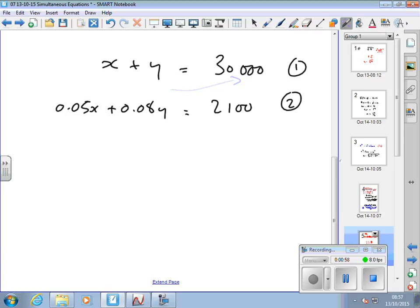So I can say from one, X, let's use X, could have done Y, equals 30,000 minus Y.